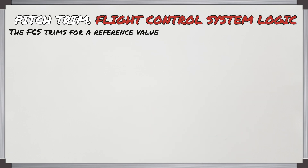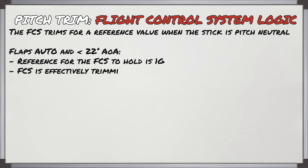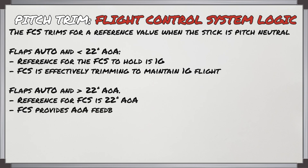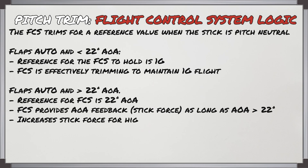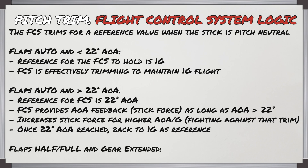The FCS trims for a reference value when the stick is pitch neutral. When the flaps are in auto and you're less than 22 degrees angle of attack, the reference for the FCS to hold is 1g, so it's going to be effectively trimming to maintain 1g flight. When the flaps are in auto and you're above 22 degrees angle of attack, the reference for the FCS is 22 degrees of angle of attack, meaning the FCS is going to provide AOA feedback in terms of stick force as long as the AOA is above that 22 degrees.